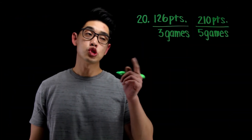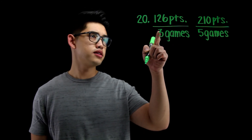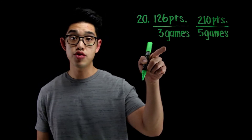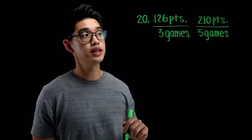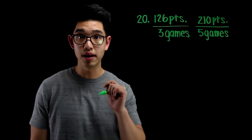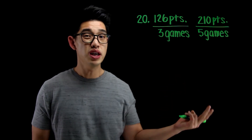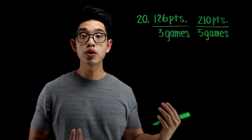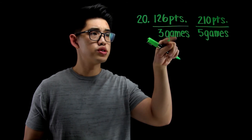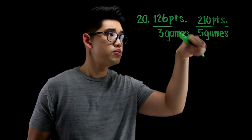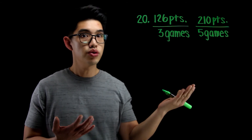For number 20, we have 2 different rates here. We see that a team scores 126 points in 3 games and another team scores 210 points in 5 games. We want to see if these are the same — if they're equal. So I'll find the unit rate for each: how many points each team scores in 1 game, and then see if they're equivalent.